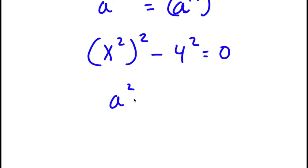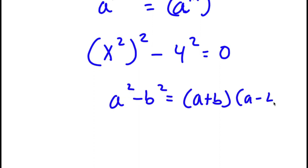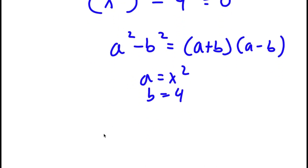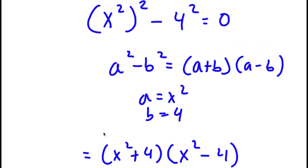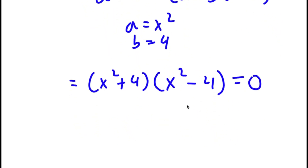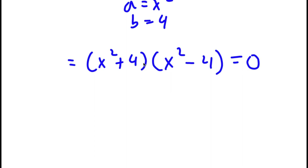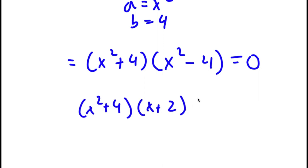Using the difference of squares formula — a squared minus b squared equals (a plus b)(a minus b) — with a equal to x squared and b equal to 4, I get x to the power of 2 plus 4 times x to the power of 2 minus 4 equals 0. Then x squared minus 4 factors further as x plus 2 times x minus 2, giving x squared plus 4, times x plus 2, times x minus 2 equals 0.